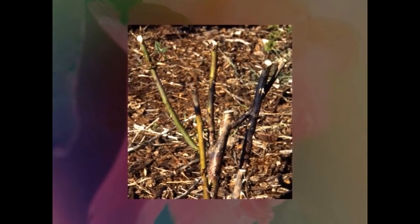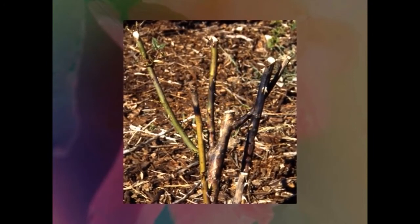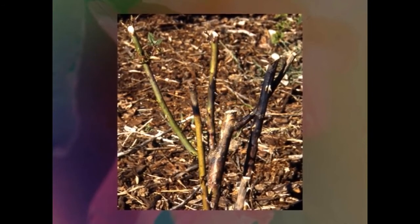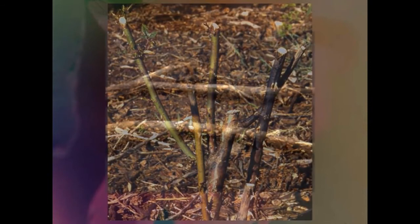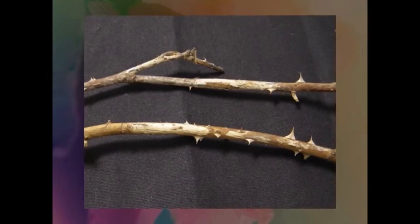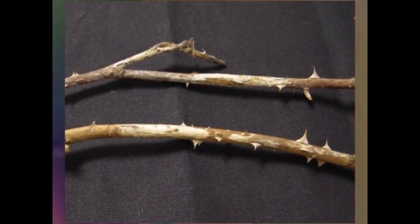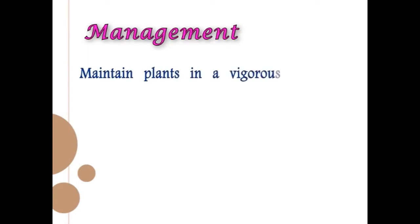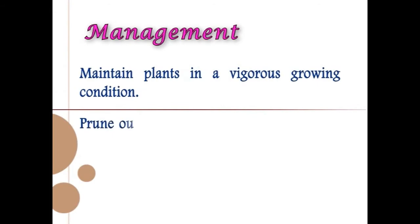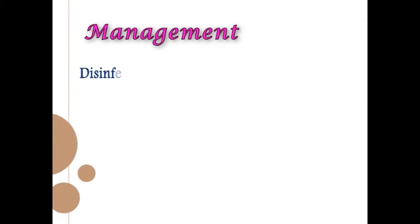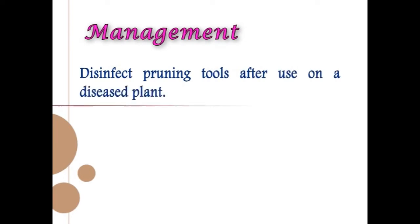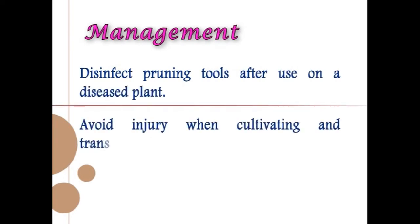The disease can affect any part of the stem, initially producing yellow or red spots on the bark, which enlarge into brown cankers with dark margins and the bark cracks and becomes sunken. For management, maintain plants in vigorous growing condition, prune out and burn all infected portions of canes, disinfect pruning tools after use on diseased plants, and avoid injury during cultivation and transplanting.